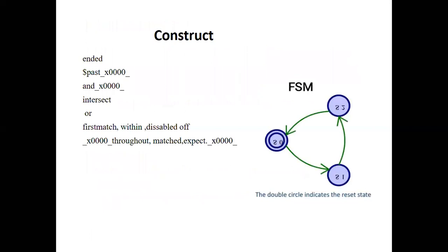Next is what are the constructs. Here is a list of constructs used in System Verilog, such as ended, dollar passed, and intersect or first_match, within, throughout. The first_match construct will be used in the example to explain how the FSM works. Here is a diagram showing three different states of an FSM: S0, S1, and S2.